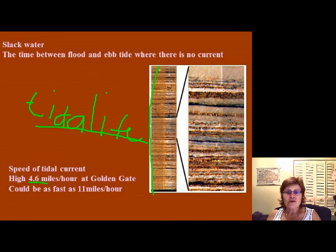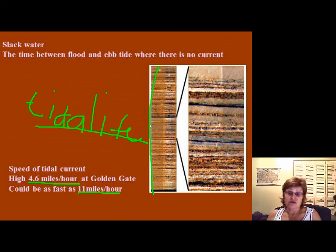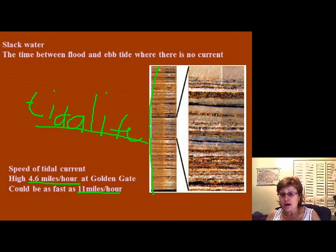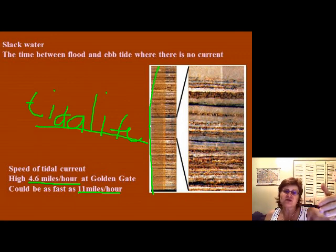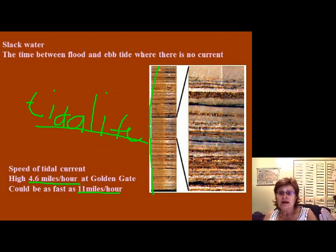Tidal current speed is about 4.6 miles per hour, but at the Golden Gate it can be faster — up to 11 miles per hour. In France, there is actually a tidal electric power plant located in a bay where the tidal range is really large and current speed is really fast, allowing them to produce electricity.